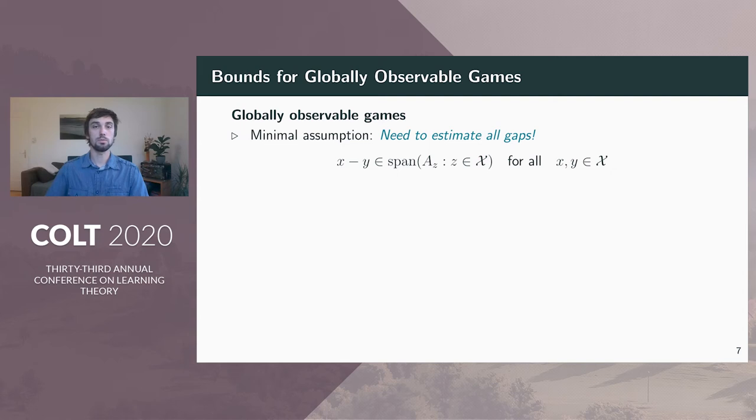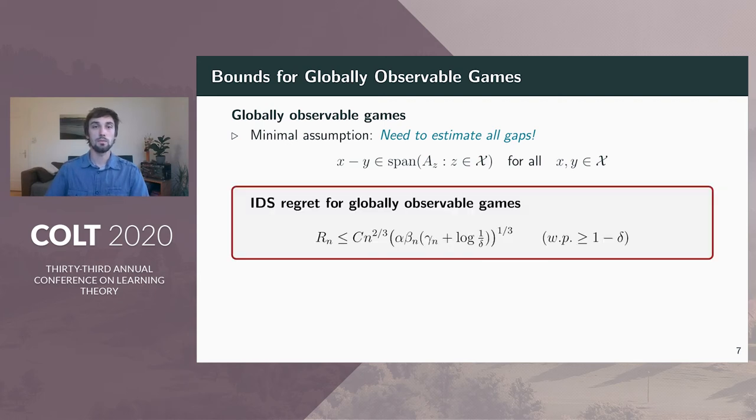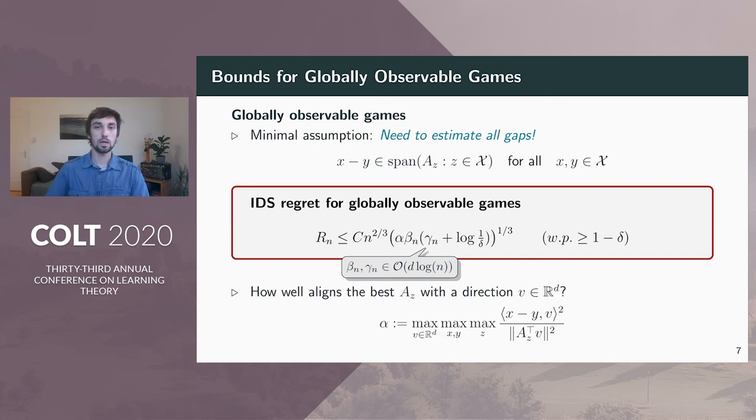Our first result is for globally observable games. If you think about it for a moment, a minimal assumption that we need is that we can estimate reward differences from the feedback that we get. The precise condition that we need is that any difference vector of two actions is contained in the subspace spanned by the observation operators. With this assumption, we get our first regret bound. The bound depends on the horizon n, the width of the confidence set beta_n, and the total information gain gamma_n. We further introduce an alignment constant, which captures how well the feedback maps are aligned with the reward differences under the worst case parameter. Essentially, that's a signal-to-noise ratio. As you can see, in this case, the regret scales like n to the two-thirds.